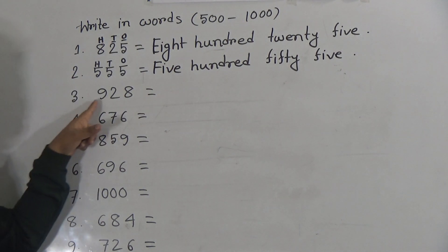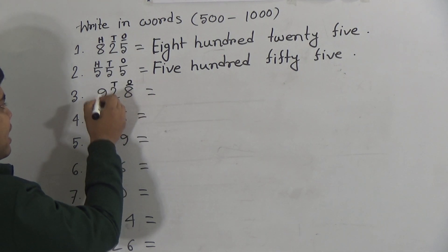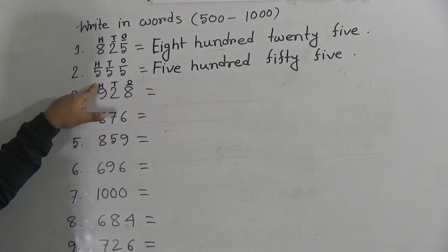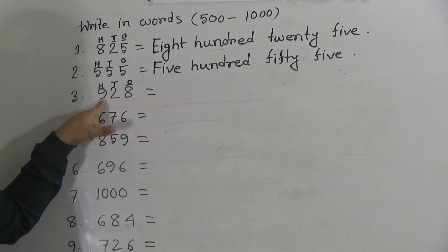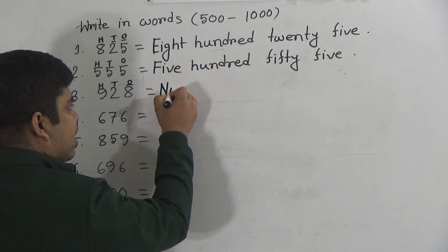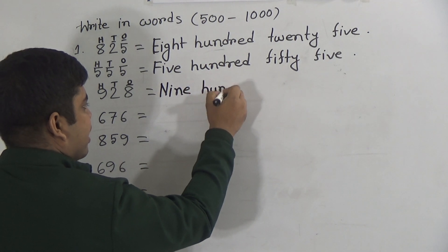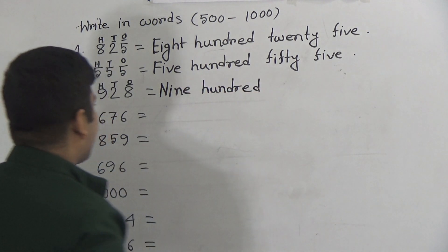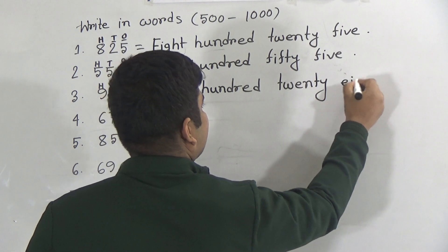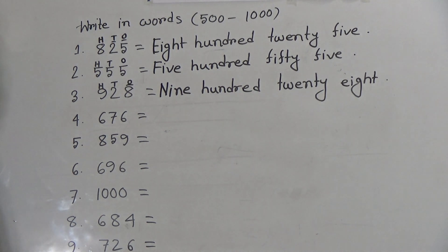Next, number 3: 9, 2, 8. Here 8 is in the 1's place, 2 is in the 10's place, and 9 is in the 100's place. So we read this number as 928. First of all we write 9: N-I-N-E. Then hundred: H-U-N-D-R-E-D. Nine hundred. Then 20: T-W-E-N-T-Y. Then 8: E-I-G-H-T. I hope you have understood how to write this number.